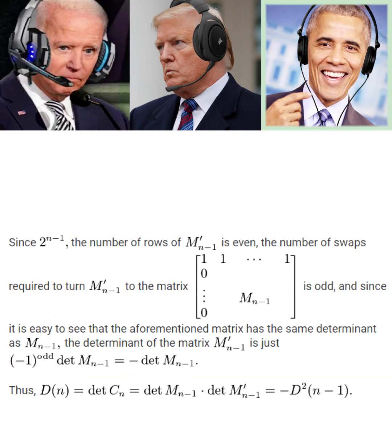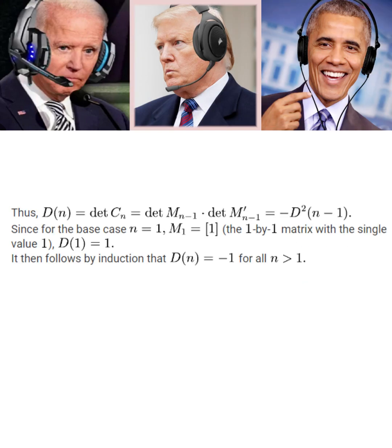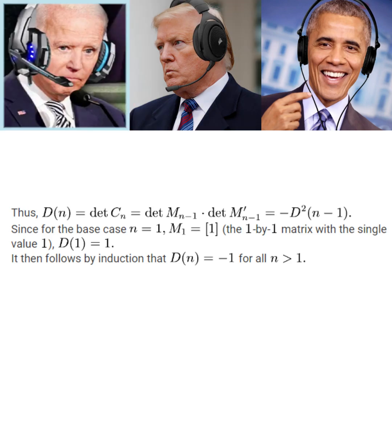Putting all of this together, we finally obtain that D of N equals negative D squared of N minus 1. Oh, and now we're on the home stretch. It's pretty obvious that in the base case of N equals 1, D of N equals 1. Then we can just use simple induction to show that D of N equals negative 1 for all subsequent N. Nice job on finishing the proof off, Trump.